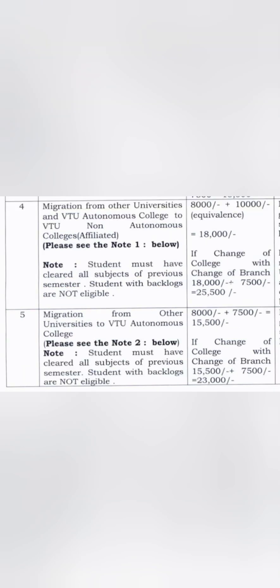The fourth category is migration from other universities — like Dayananda Sagar University, CMR University, or Reva University — to a VTU non-autonomous affiliated college. This also covers students moving from a VTU Autonomous College to a VTU Non-Autonomous College. For both these cases, you have to pay 18,000 rupees extra, making the total fee 18,000 plus 7,500, that is 25,500 rupees for change of branch and college.